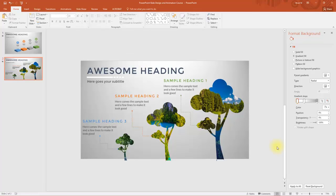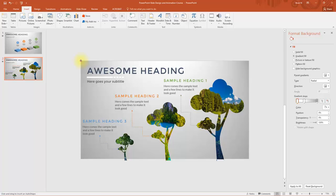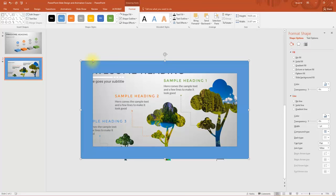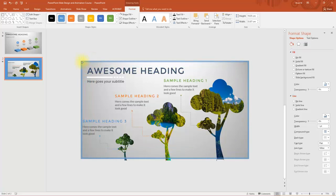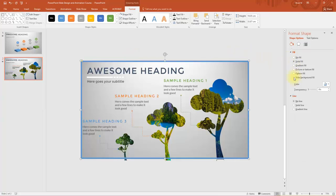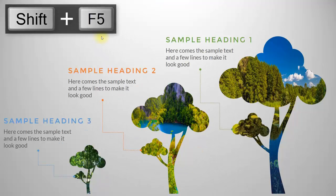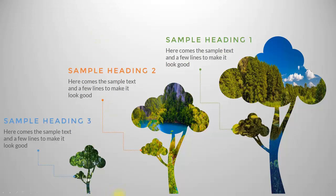For a final touch, go to Insert Shapes and choose the Frame shape. Draw it to cover the entire slide and adjust the inner yellow dot so it doesn't overlap the sample headings. Remove the shape outline and change the fill color to Slide Background Fill. This creates a nice effect — it cuts the bottom of the trees so that in slide preview mode, the trees appear to start and end within the slide, perfectly blending with the gradient background.